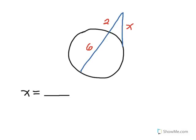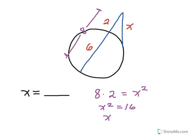In this next example, same setup — a secant segment and a tangent segment drawn to a circle from an external point. The whole secant times the external piece equals the tangent squared. The whole secant length is 6 plus 2, or 8. So 8 times 2 equals X squared, giving X squared equals 16. Taking the square root, X equals positive or negative 4, but since it must be a segment length, X equals positive 4.